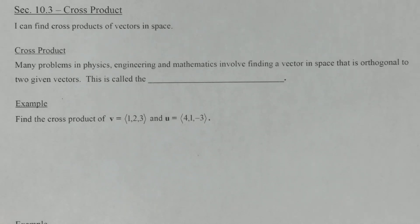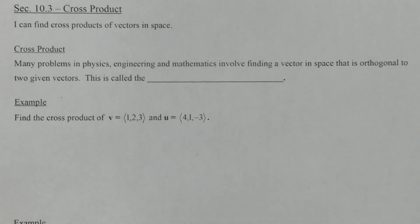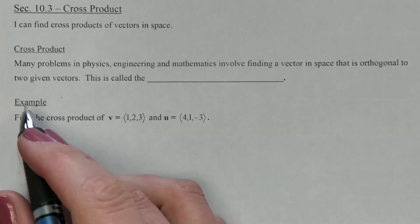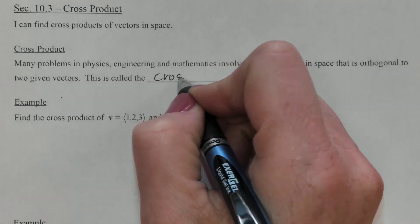This is section 10.3 and today we're going to be talking about cross product, which is a little different than dot product, but kind of along the same lines. Dot product had us testing not only our multiplication, but it was also a test to see if vectors were orthogonal. So we eventually need to talk about orthogonal in 3D space too. Many problems in physics, engineering, and math involve finding a vector that is orthogonal to two given vectors already. This is called finding the cross product.